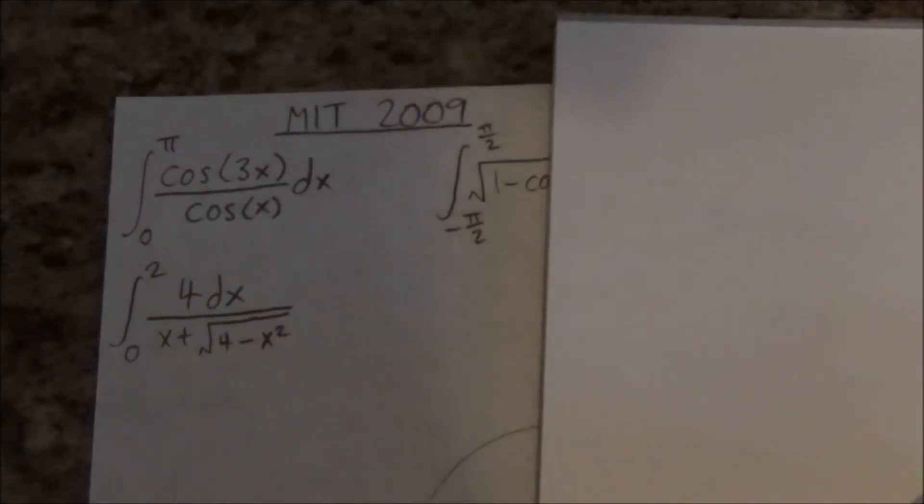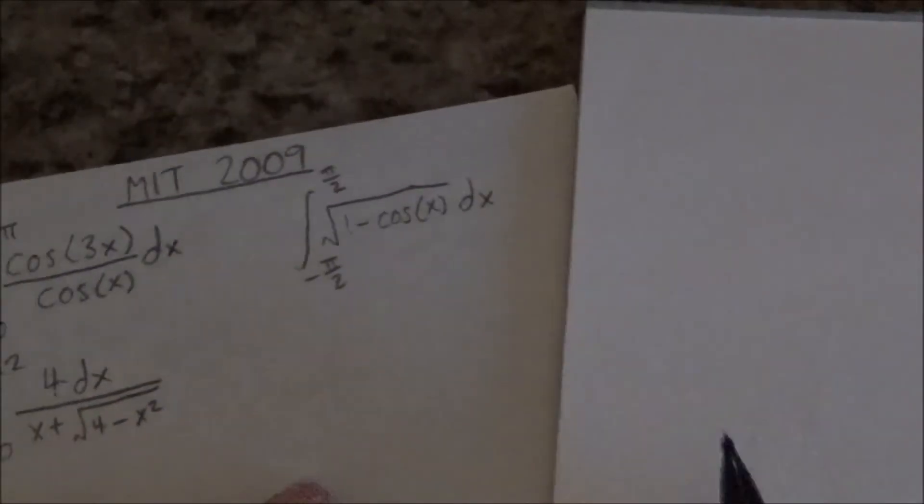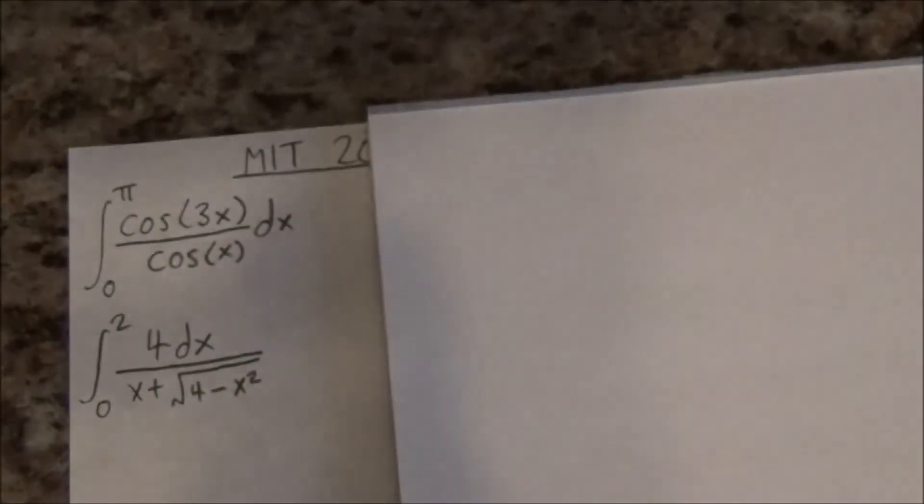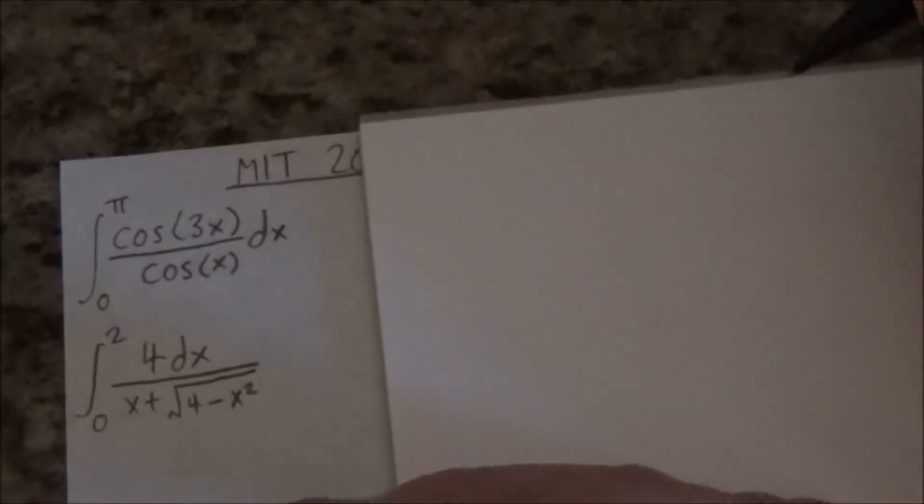Alright, time for 2009 MIT integrals. Okay, the first one. Zero to pi cosine 3x divided by cosine x dx.